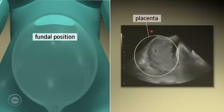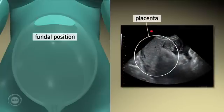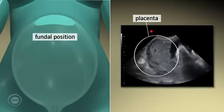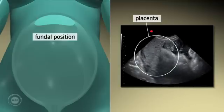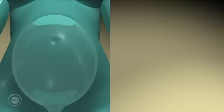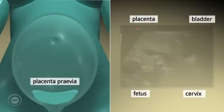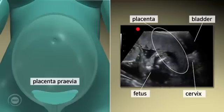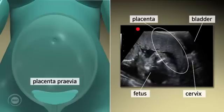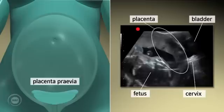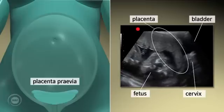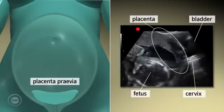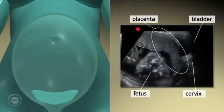Fundal position. Scanning in the longitudinal plane, the fundal placenta will be displayed on the left side of the screen. Placenta previa. Scanning in the longitudinal plane, the previa position will be shown on the right side of the screen. A low anterior placenta will appear between the bladder, which is seen at the extreme right of the screen, and the fetus on the left.